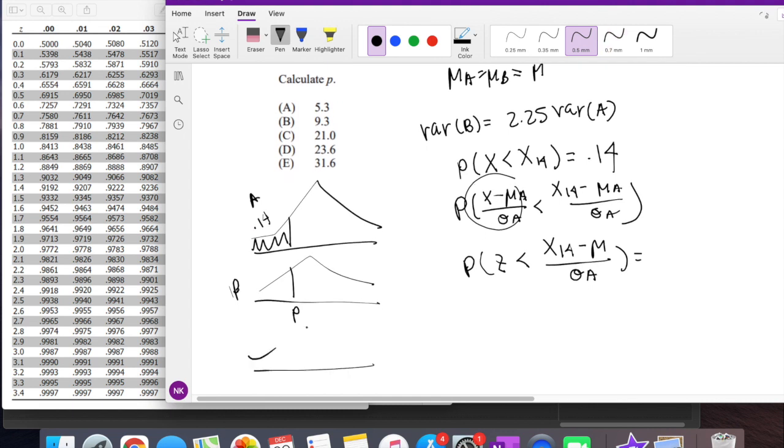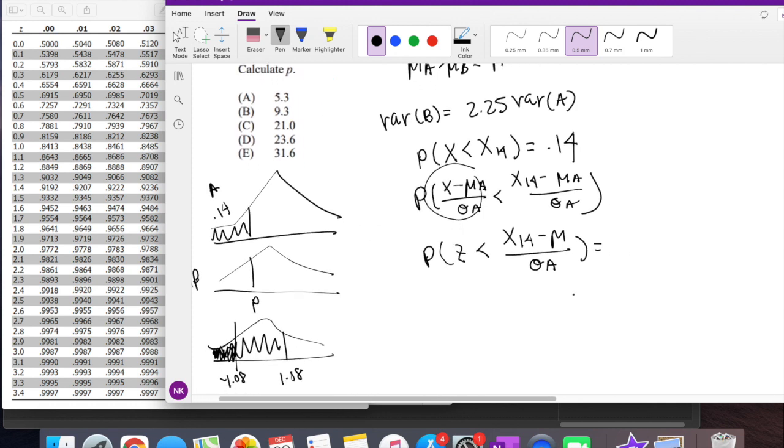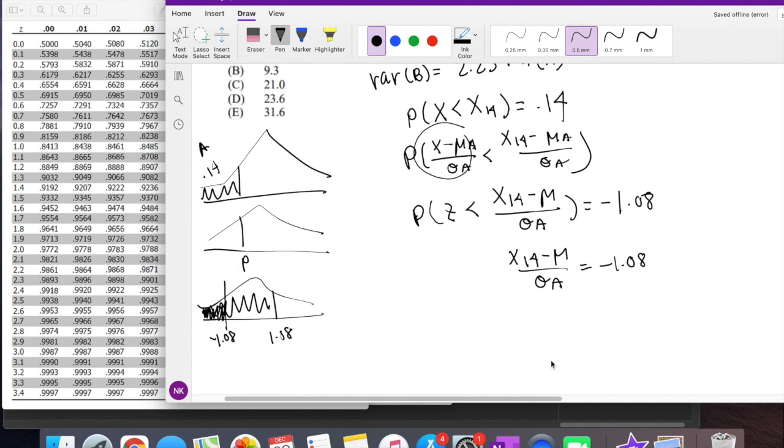So they're saying 1.08 on this side, this is 86%. So we can assume that negative 1.08 is going to give you that 0.14 or 14%. So this is equal to negative 1.08. So we can say the 14th value minus mean over standard deviation of A is equal to negative 1.08. We can solve for this unknown X 14th. So I'm going to multiply the standard deviation to the other side, negative 1.08 standard deviation of A, plus mean.